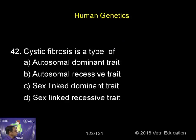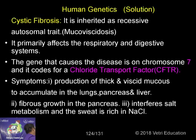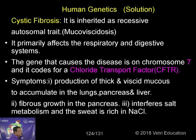Cystic fibrosis is a type of autosomal recessive trait. It is caused by a gene that codes for a chloride transport factor. The gene is located on chromosome number 7.